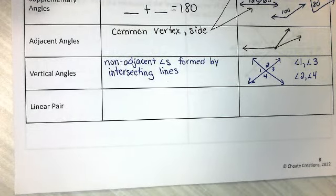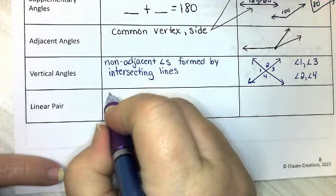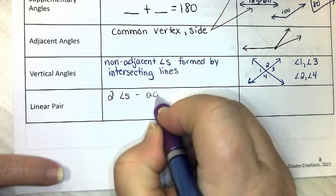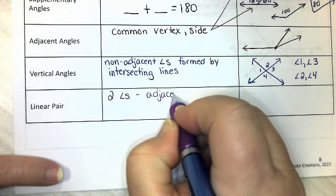The next definition we have is a linear pair. Linear pair is exactly what it sounds like. It's a pair. It's two angles. They are adjacent. And they make a line.